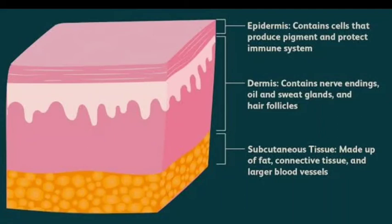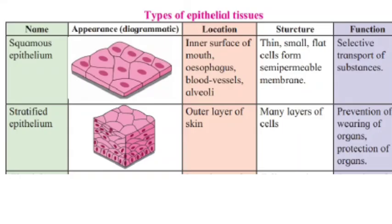Here a picture of epithelial tissue is given. The first layer is the epidermis, which contains cells that produce pigments and protect the immune system — pigments give color to your skin. The next layer is the dermis, which contains nerve endings, oil glands, sweat glands, and hair follicles. The next one is the subcutaneous tissue layer, which is made up of fats, connective tissue, and larger blood vessels.